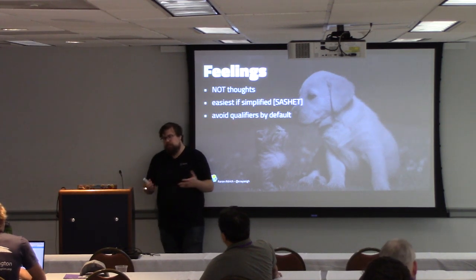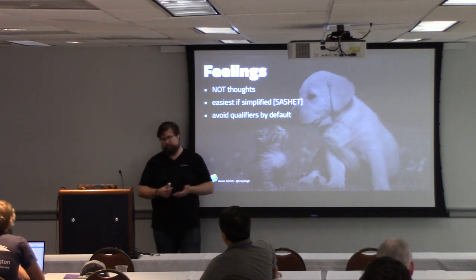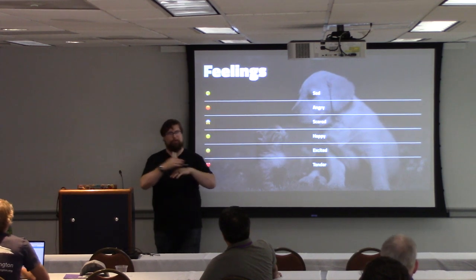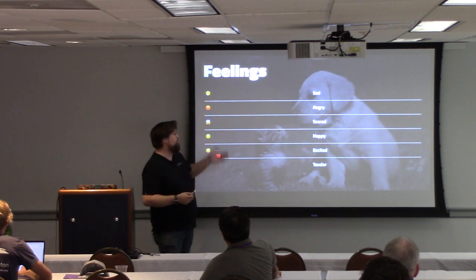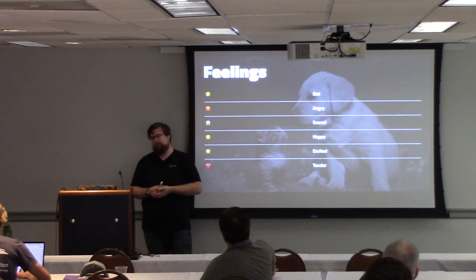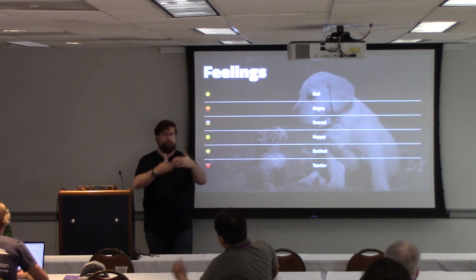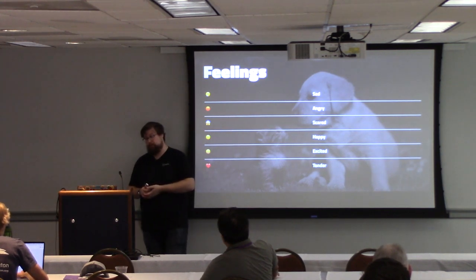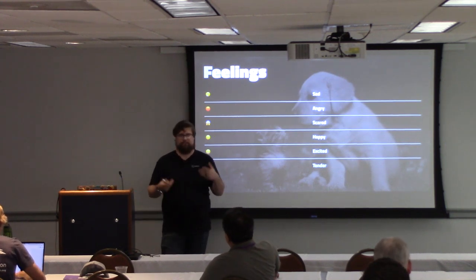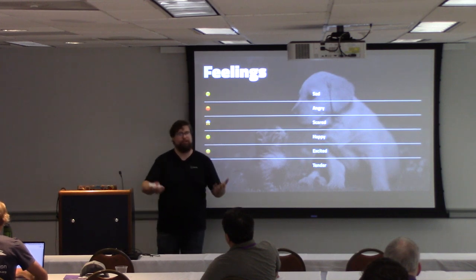I found the SACHE acronym useful for painting a short spectrum of feelings: Sad, Angry, Scared, Happy, Excited, and Tender. Sad is usually about a loss of something. Angry is usually either you wanted something and didn't get it, or someone violated a boundary. Scared is usually uncertainty about the future. Happy is usually contentedness — the opposite of loss. Excited is the opposite of scared — looking forward to a more certain future. And tenderness is a connection with other people, like feeling really empathetic when someone shares a story that hits close to home.